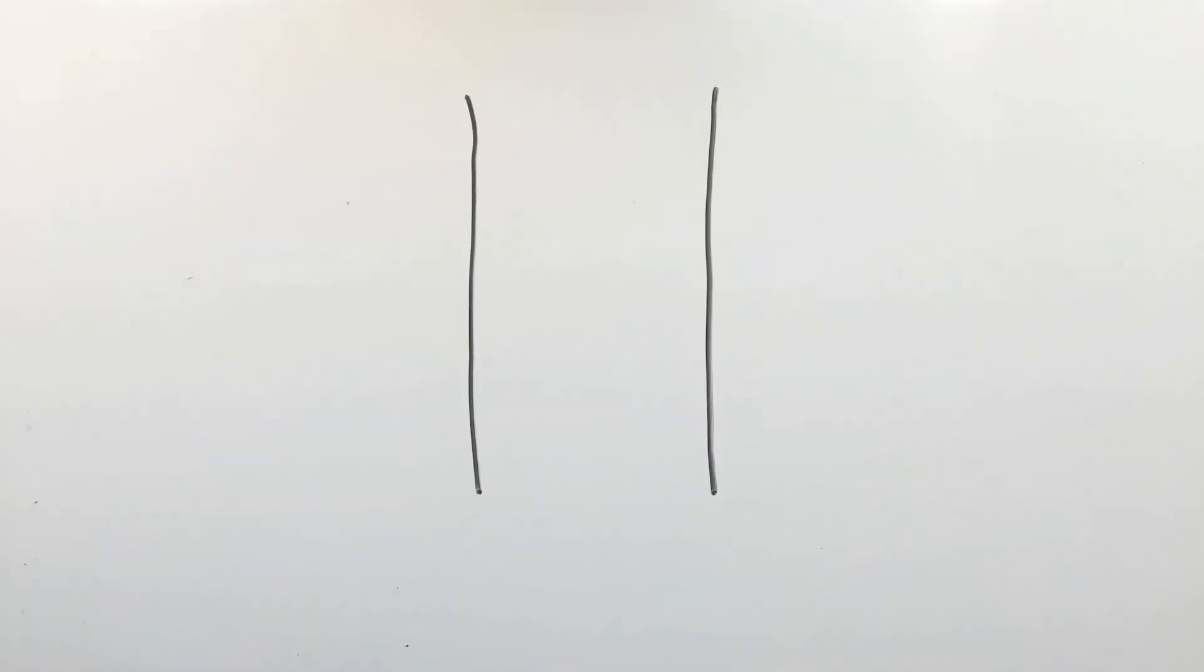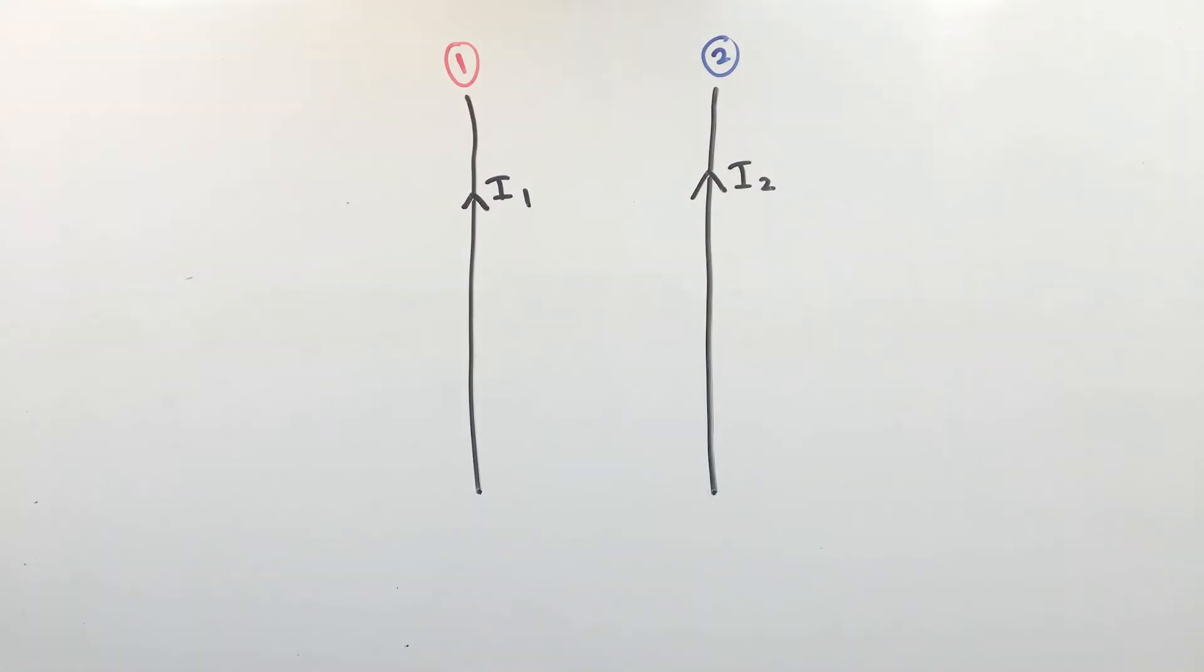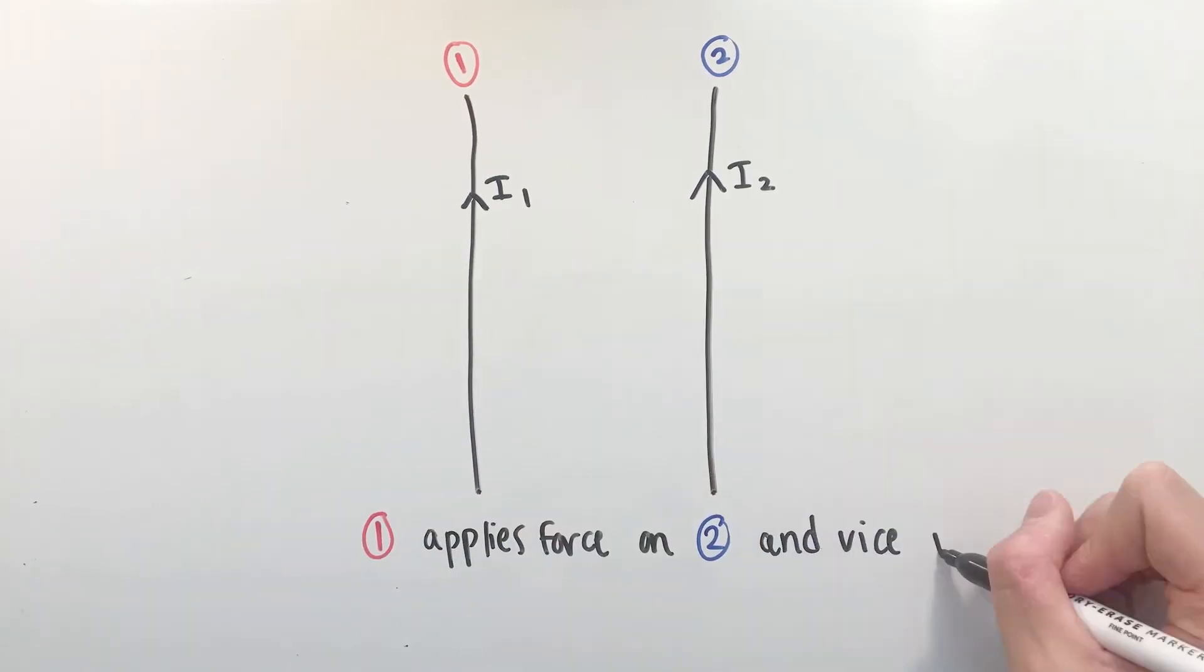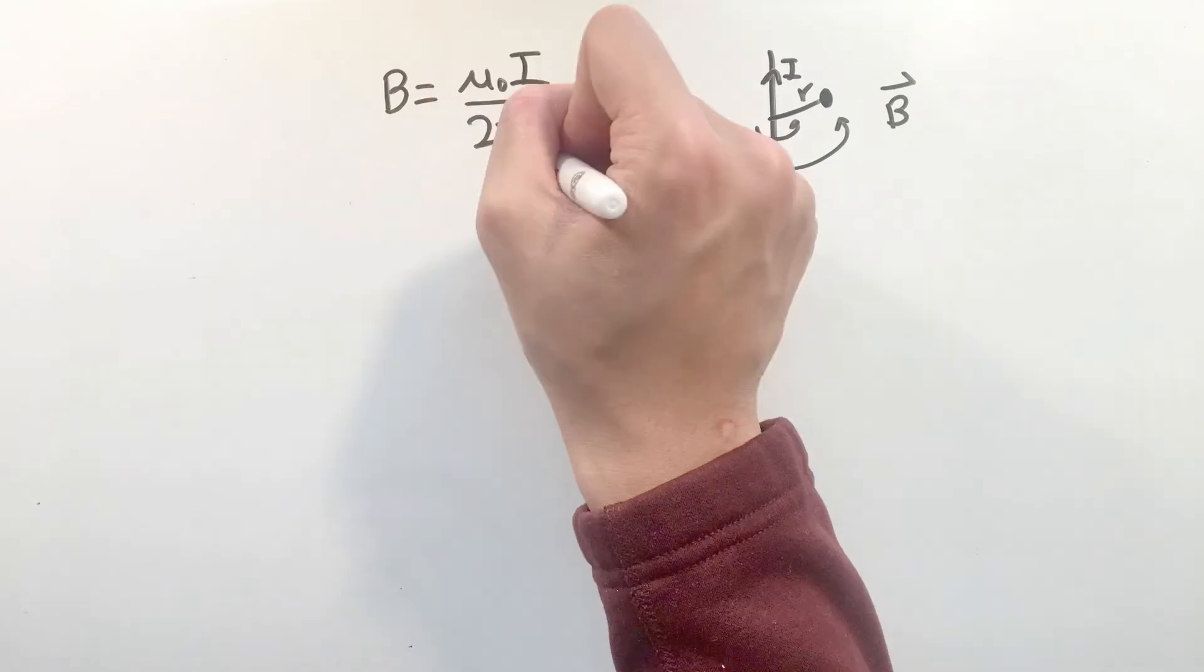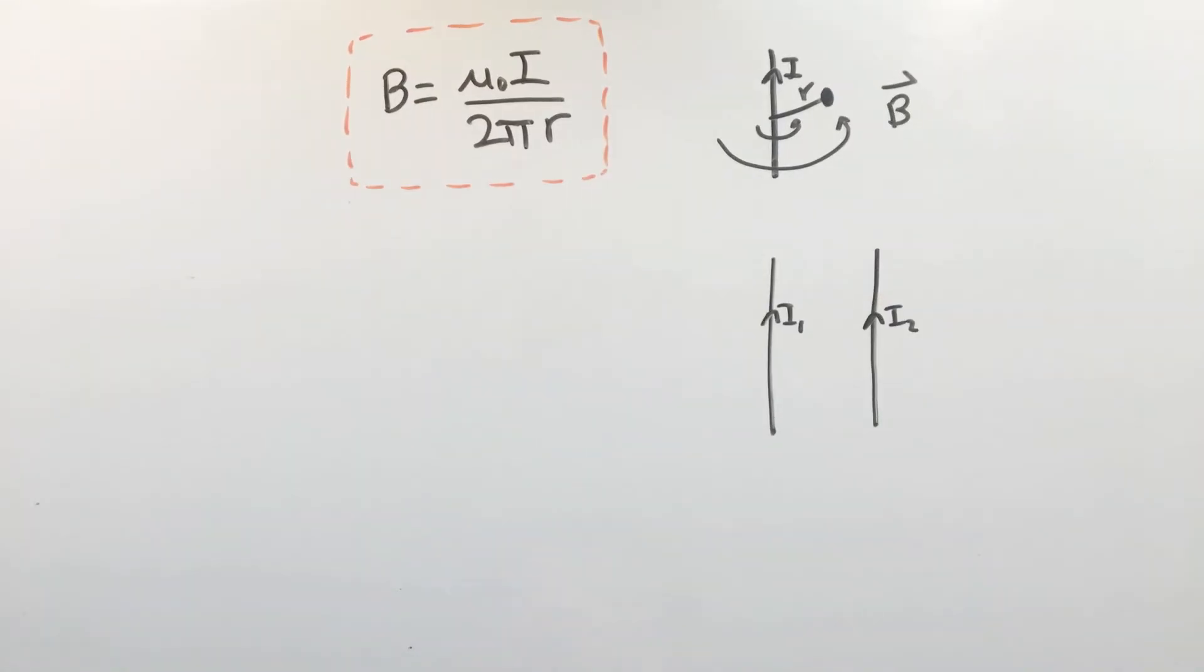One interesting application of this equation is that because current carrying wires actually create magnetic fields as well, two current carrying wires actually apply a force on one another. But, let's see how to calculate this interaction force. For now, let's accept that the magnetic field due to a current carrying wire is given by this equation here, though its derivation can be seen in my Ampere's Law video.